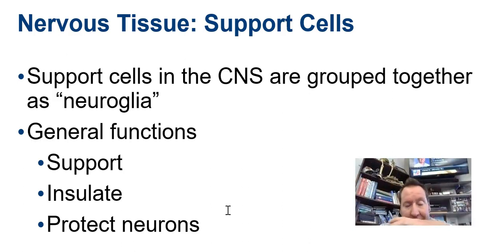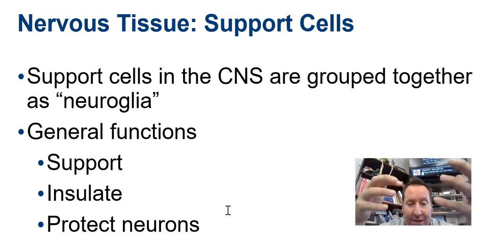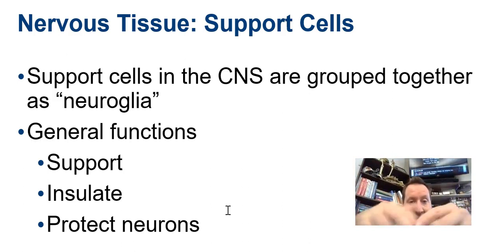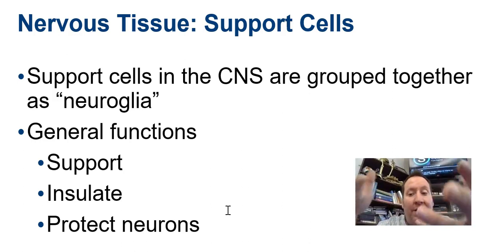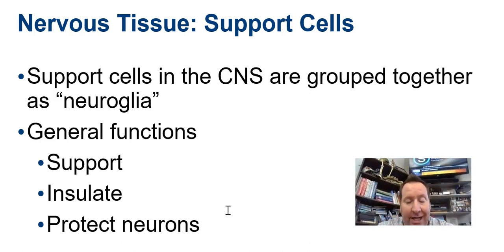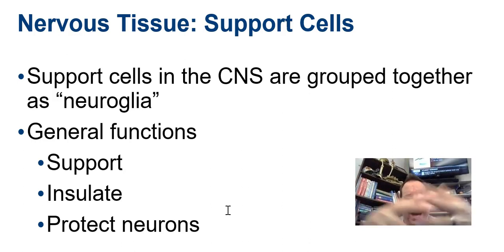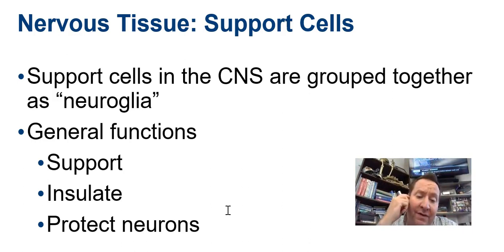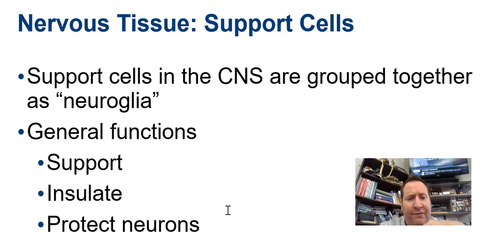I kind of envision this like the neuron is the superstar cell of nervous tissue. Like every superstar — think of a professional football player or a famous basketball player — they have a support network of people around them. Well, a neuron is no different. It has a support network of cells called neuroglial cells, or simply glial cells. These glial cells are going to support, insulate, and protect the neuron.